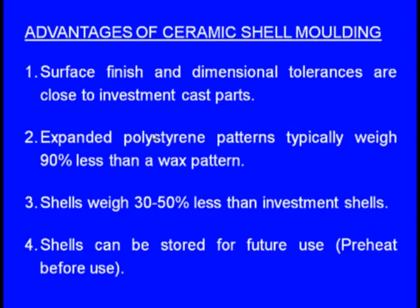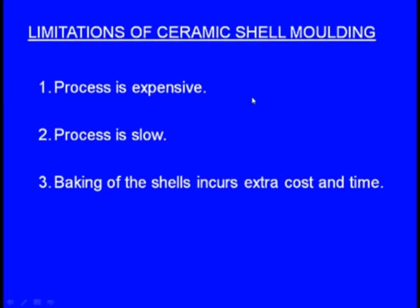We also create a shell around the polystyrene pattern. These shells weigh 30 to 50 percent less than investment casting ceramic shells, so handling them is easier. These shells can be stored for future use and made well in advance. When we want to cast the component, these shells should be preheated, then we can pour the molten metal. Limitations: the process is expensive, the polystyrene pattern is expensive, the process is slow, and these shells should be baked, which costs extra time and power.